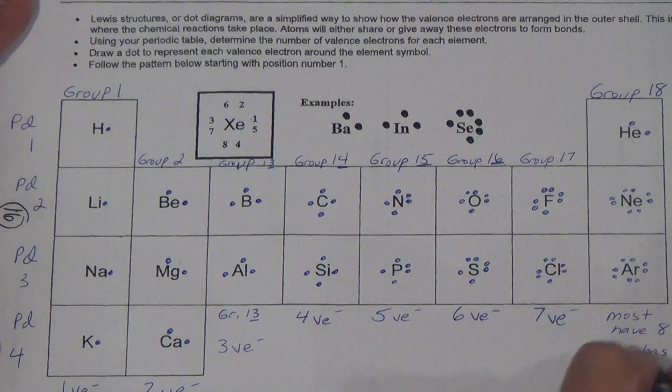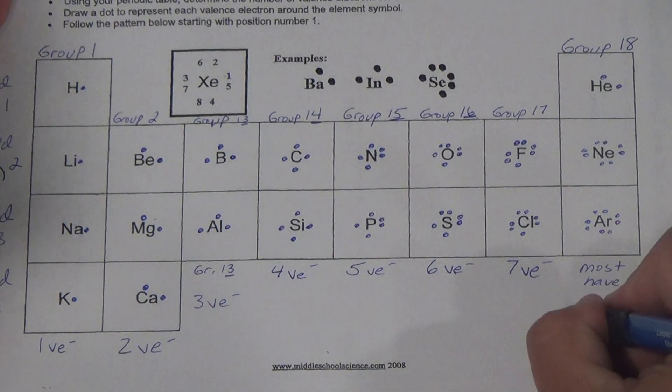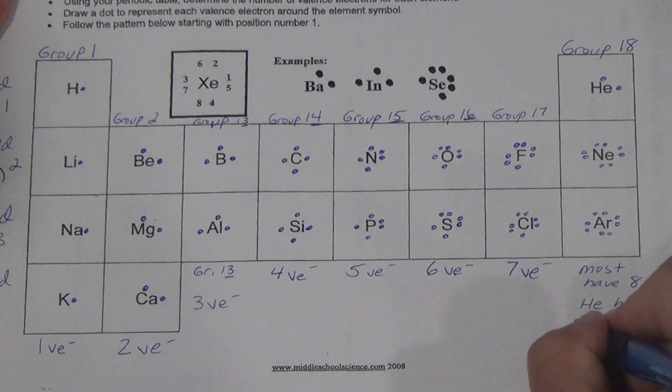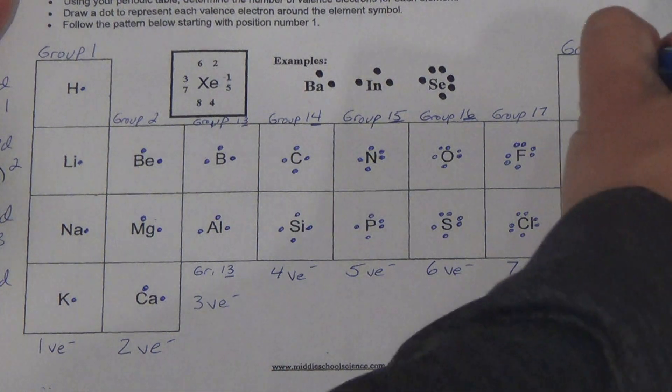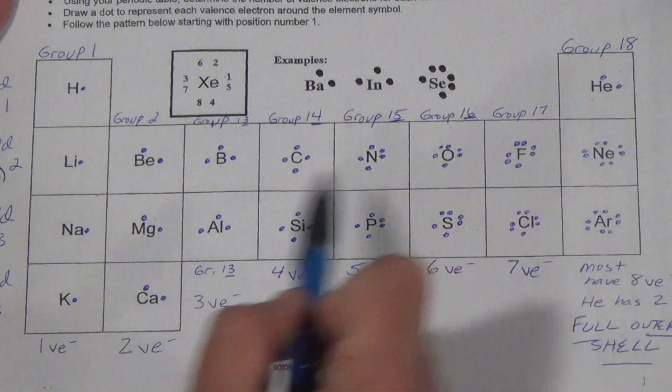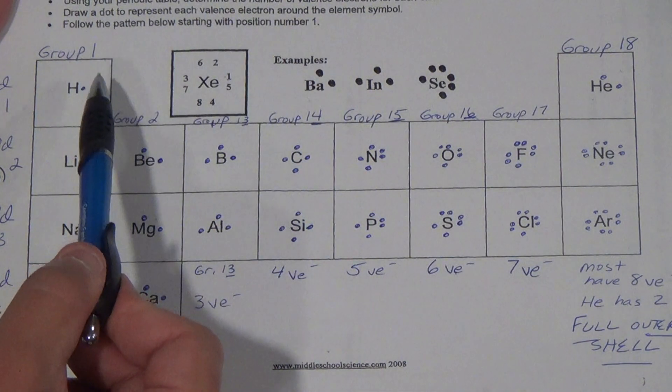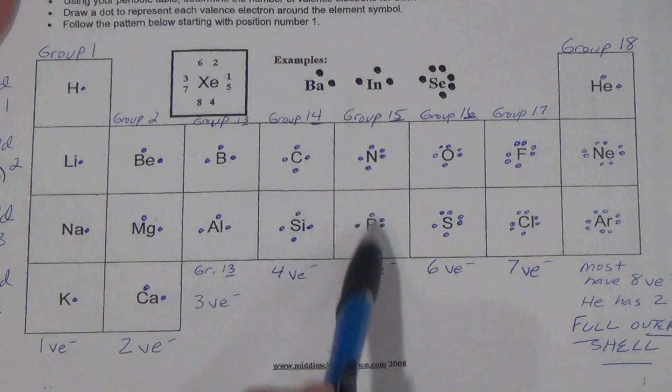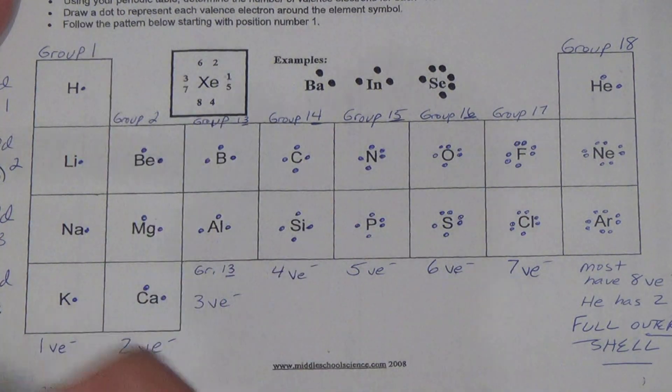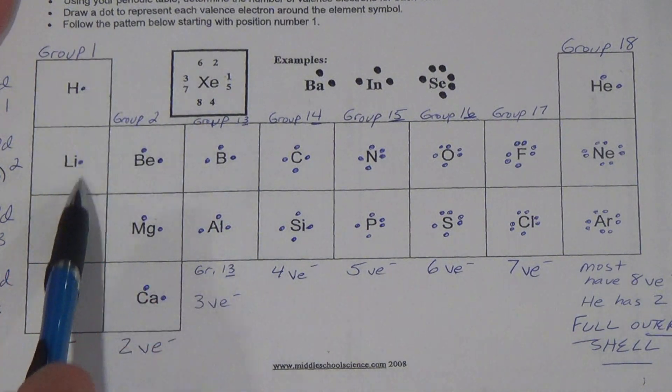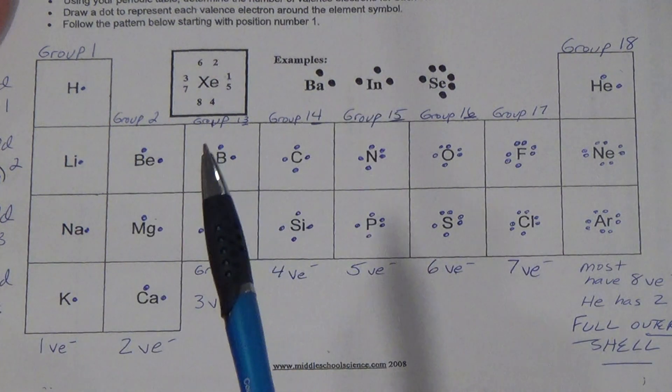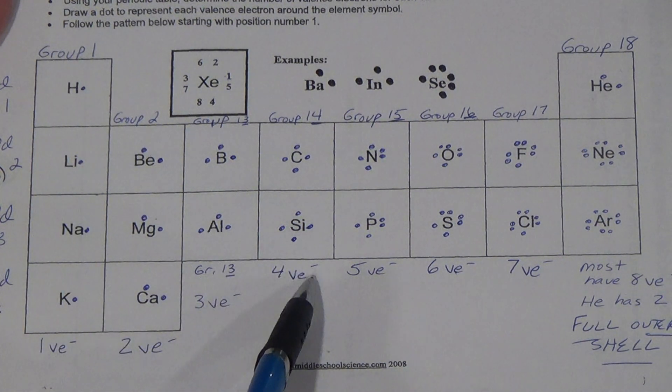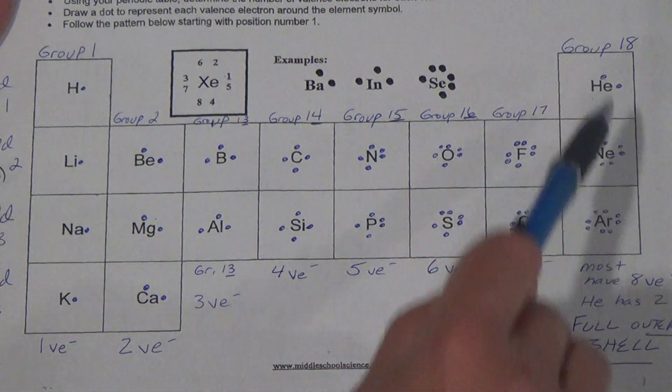So what I want you to write right here is most have eight valence electrons. Helium has two. And I want you to write this. Full outer shell. That's going to be important next week. I'm going to tell you right now. That's why helium is here. They all have a full outer shell. Okay? Huge. So right now, after this video, you should know how to draw Lewis structures and understand that the number of valence electrons goes with the group number. All elements in the same group have the same number of valence electrons. And what that means is they're going to act the same way or very similarly. And that will be next week's lesson. So, again, we are family. We're all in the same family. We have a lot of the same characteristics. You're going to learn that next week. Therefore, we act similarly because we are family. And remember, why is helium over here? Because they all have a what? Full outer shell.